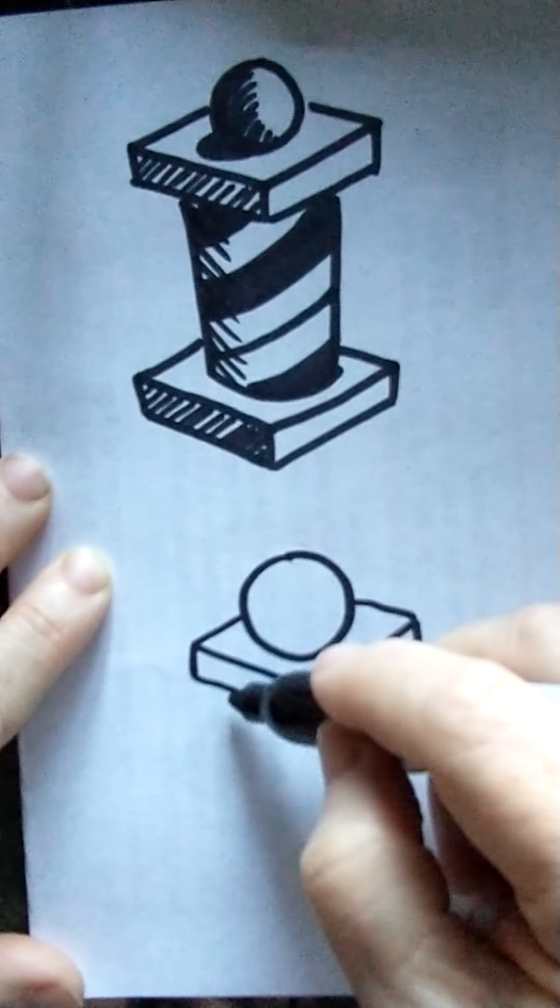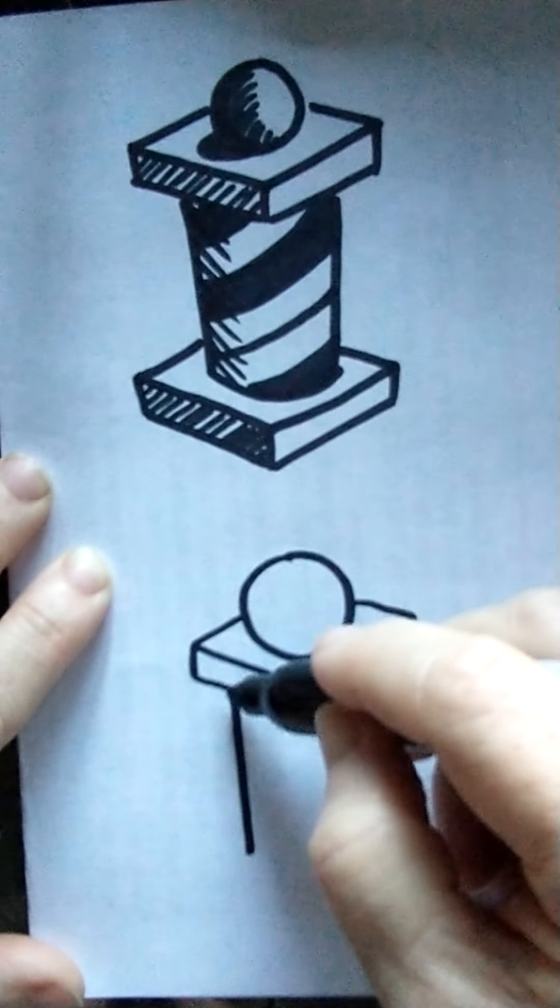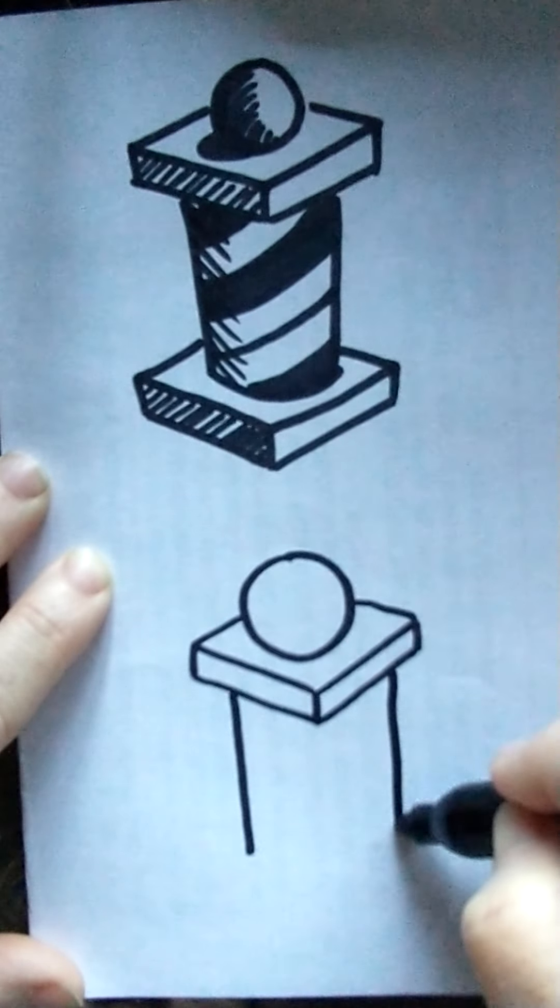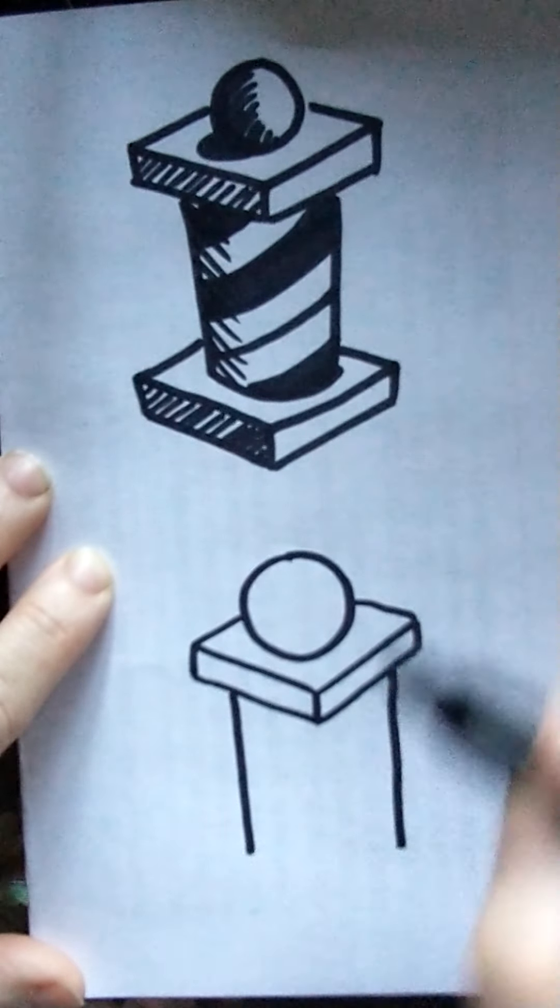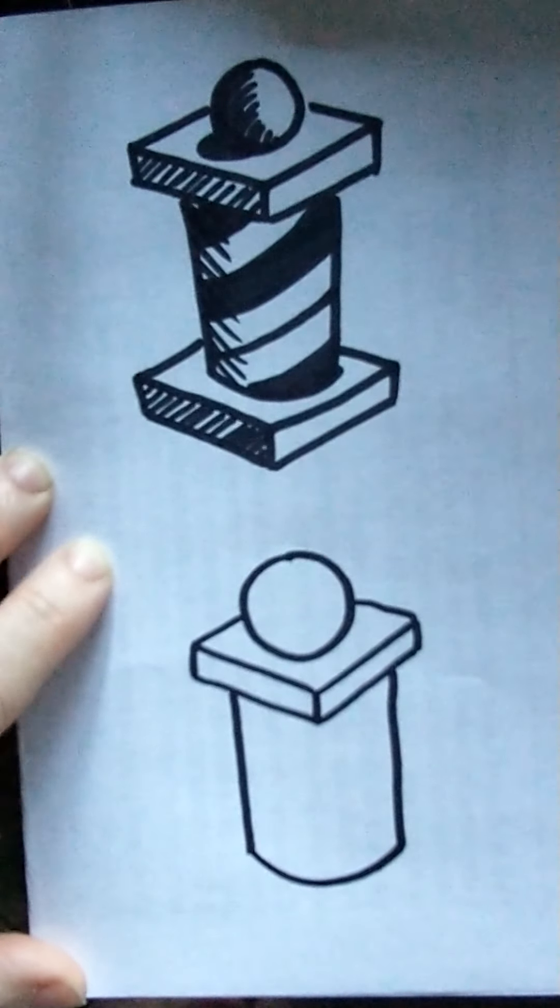And then, roughly centered, I'm gonna come straight down, and then over here, straight down. And this is a column, so it's a cylinder shape, so I'll give it a round contour.